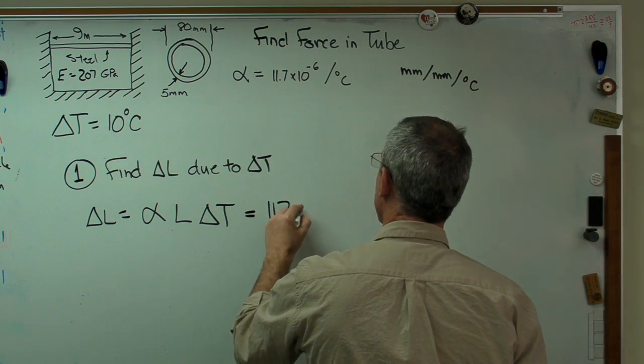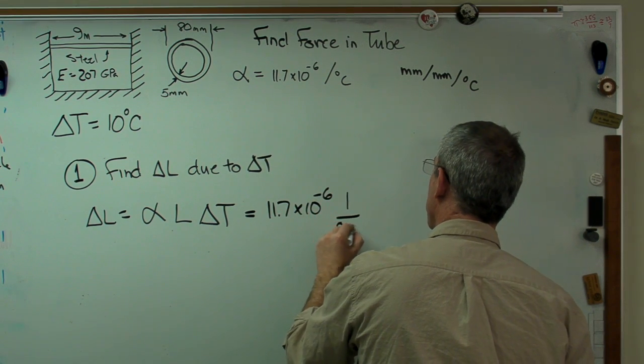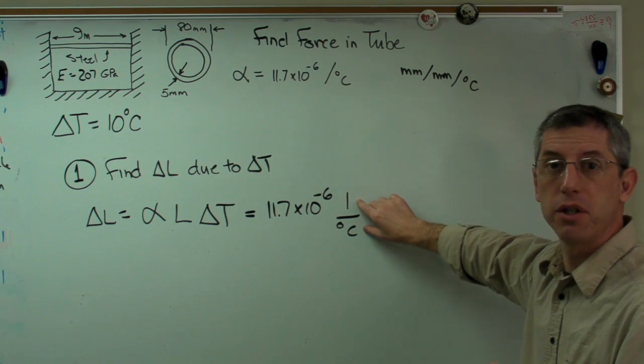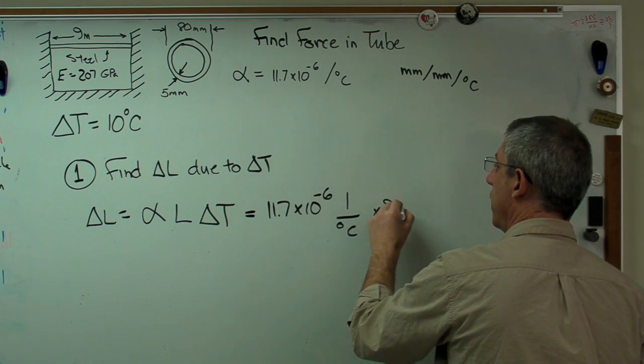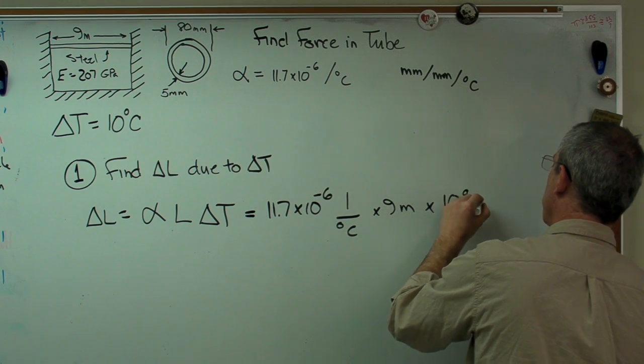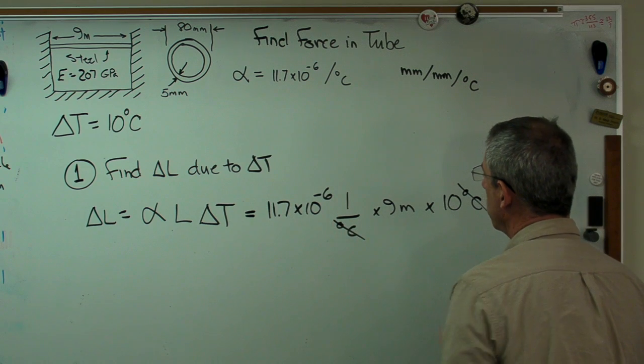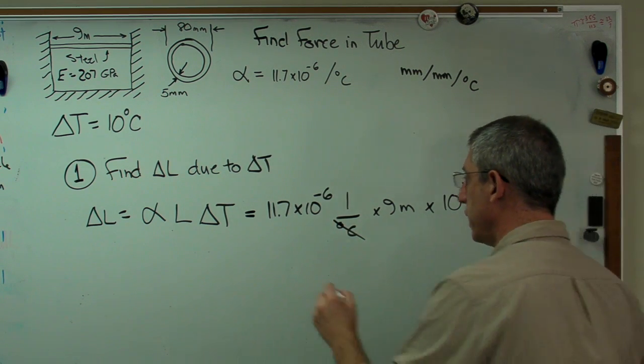This is 11.7 times 10 to the minus 6, and with a 1 over degree C there, make this very obvious here so we can check our units. Always check your units. Times 9 meters, that's the length, times 10 degrees C, that's my change in temperature. Degrees C and degrees C cancel out. I'm going to get meters as length. That's what I want.